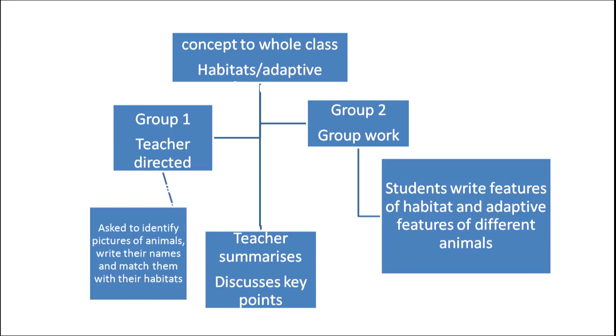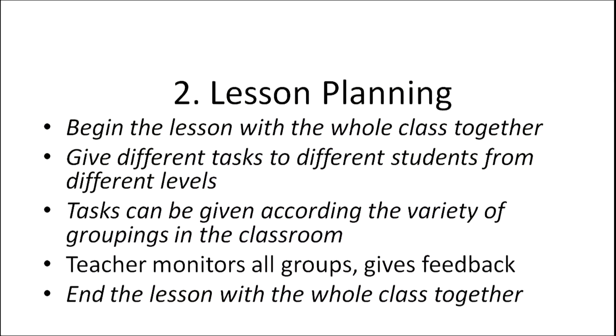After discussions in group two, the teacher takes feedback from students and asks them to write features of habitat and adaptive features of different animals. At the end, the teacher summarizes the concepts by bringing the whole class together and discussing key points. Therefore, in lesson planning for a multi-level classroom, the teacher always begins the lesson with the whole class together, gives different tasks to different levels, and monitors all groups.